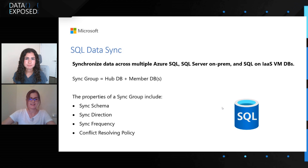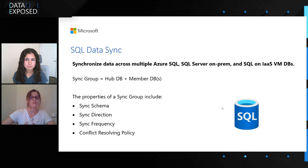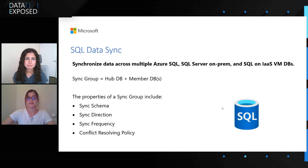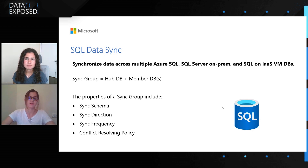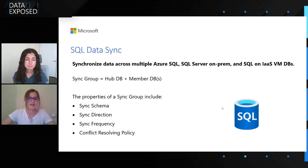Then you have the Sync Direction, and here you can do one-directional replication or bi-directional Sync — which is really cool about SQL Data Sync. So you can go from member to hub, hub to member, or both. Then you have a Sync Frequency. When you set up your Sync Group, you have the option to run Sync manually on demand whenever you need it, but you can also have automatic Sync. If you select automatic, you can select a frequency as low as 30 seconds but also as high as 30 days, so there's a lot of options.